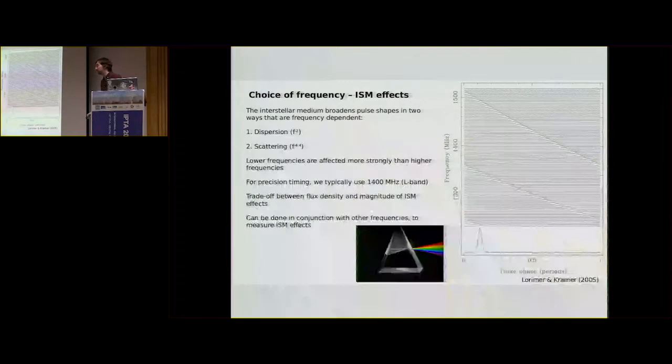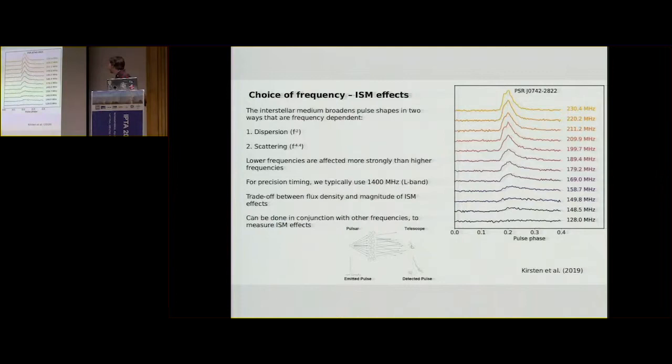You'll see more about this later in the week. It can be removed precisely and mathematically from our observations. Something that's a little bit more difficult to remove, however, is scattering, which scales even more dramatically with frequency. So what I'm showing here is just how scattering affects the pulse shape as you go to lower and lower frequencies. So we start off at 230.